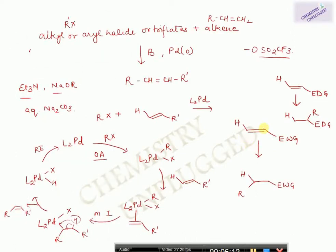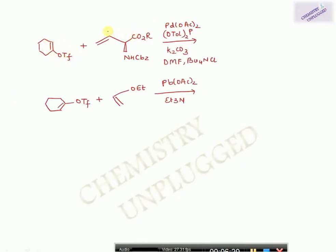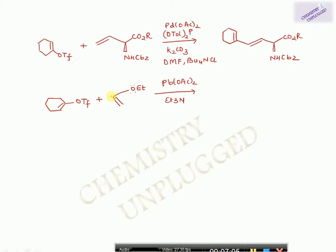Here we have two examples. In the first, this is a triflate and the alkene is attached with an electron-withdrawing group, so the cyclohexene attaches at this position and you get this product. In the second example, the alkene is attached with an ether which donates electrons — the amine is protected by a CBZ group — so the cyclohexene attaches at this carbon to give the final product.